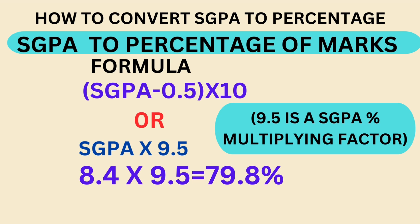Here I am taking SGPA as 8.4. 8.4 into 9.5, we are getting 79.8 percent, or approximately 80 percent. So this 80 percent is SGPA to percentage of marks. In this way we convert SGPA to percentage of marks.